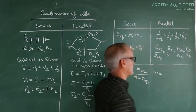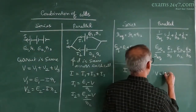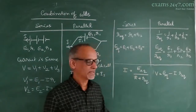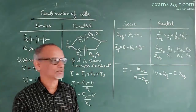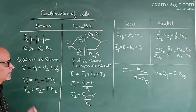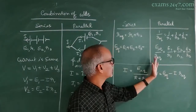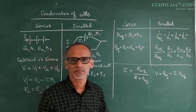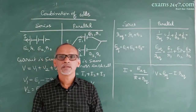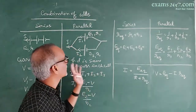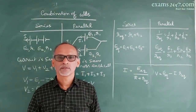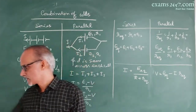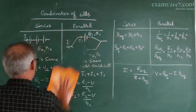The terminal potential difference across the entire combination is E_eq minus I times R_eq, valid for both series and parallel circuits. Series combination is preferred when more EMF or higher potential difference is needed, whereas parallel combination is preferred when higher current is needed.